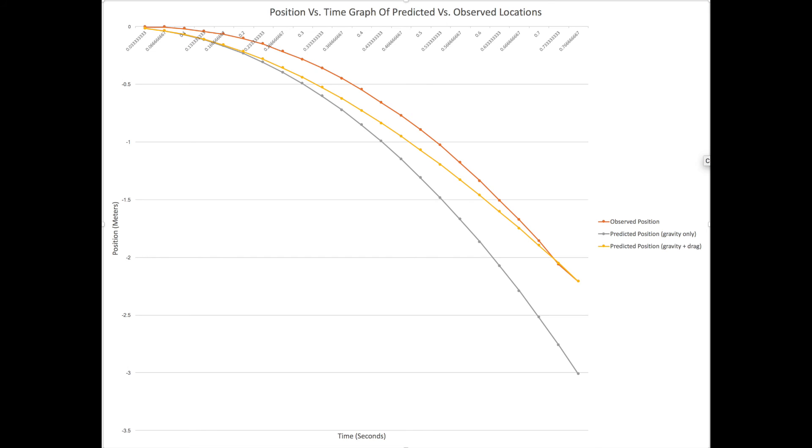For example, in the observed position graph, there are instances where I could have slightly mis-clicked here and there in Tracker, which all falls back on human error. Also, because the ball was not in a perfect circle, falling a certain way could have caused the drag to act in a different manner. However, ignoring all of these potential compounding variables...